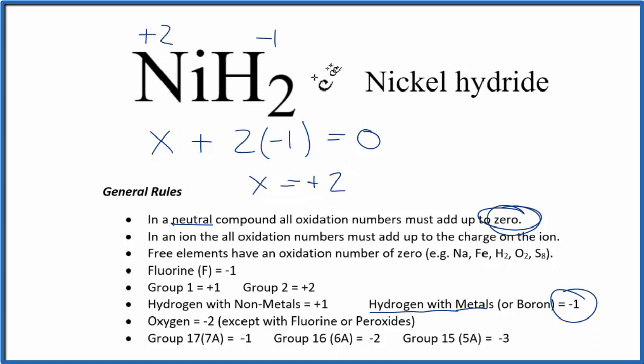You probably could have just figured it out by saying two times minus one is minus two, and the nickel needs to be plus two. But this is the thinking behind how we're figuring this out.